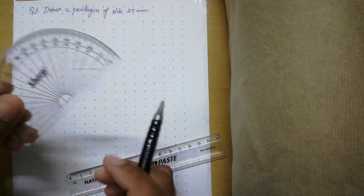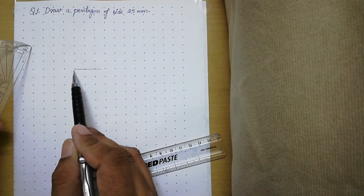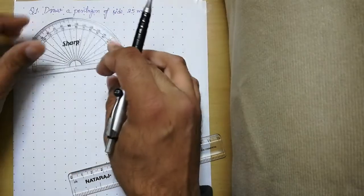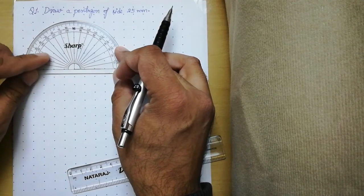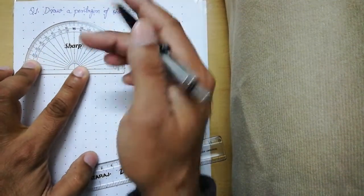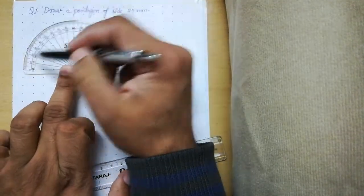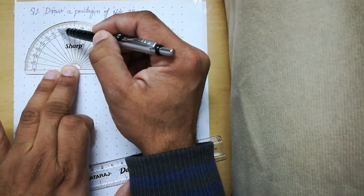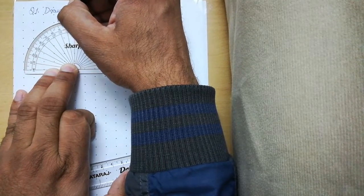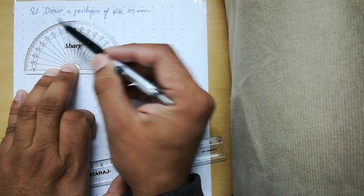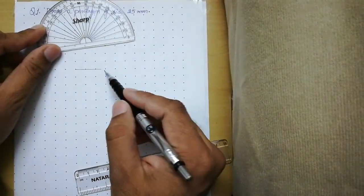Then use your protractor and put it on one end of this line and measure an angle of 72 degrees from this side. This is zero, 72 units more, so this is 72 degrees. Then put your protractor on